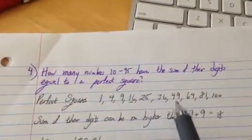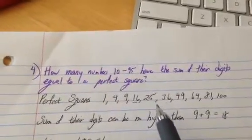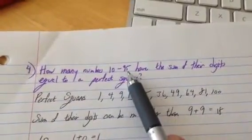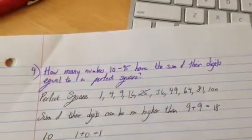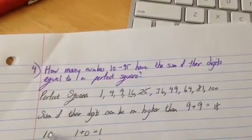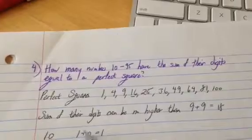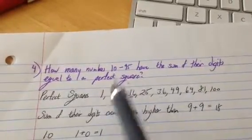And so you're like, dude, that's a lot of options. And you could go through all the numbers, 10 through 95, and just add up their digits, like 1 plus 0 is 10. 1 plus 0 is 1. Hey, that's a perfect square. Cool.